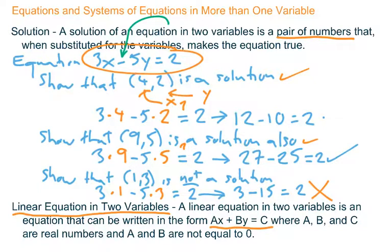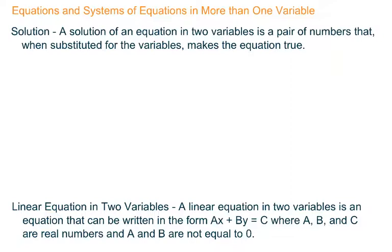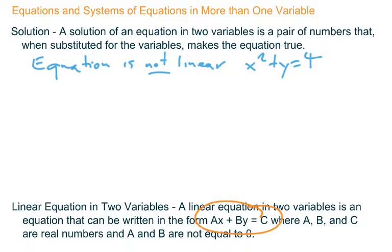All right, before we leave this, let's explore what an equation would look like that is not linear. So let's clear that out. And here's a perfectly good equation, but this equation is not linear. And this will help you see the equation I'm thinking of is x squared plus y equals 4. There's no way that that can be written simply as Ax plus By equals C because of the square. So if there's a square on one of the variables, that's not linear. Nothing wrong with it. It's just not linear.